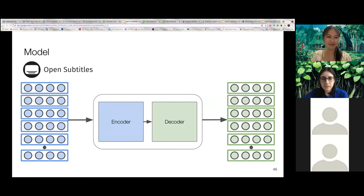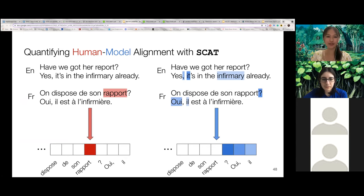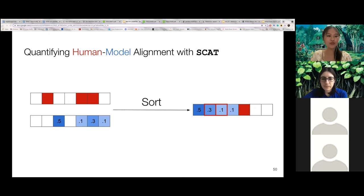And we use 14 million parallel English to French sentences from the OpenSubtitles dataset for training. So to quantify the alignment between human and model attentions, we construct vectors that represent the SCAT annotations and the model attentions while translating the ambiguous pronoun. Then taking the SCAT vector and the model attention vector, we first sort the tokens by the decreasing model attention weights. Then we look at the rank of the first supporting context token from SCAT in the sorted vector. So in this example, the alignment score is two.